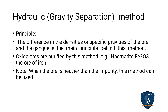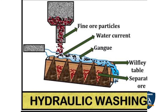You must know that when the ore is heavier than the impurity, this method is used. The ore being denser than the impurity is the key condition. The principle is the difference in density between the ore and gangue. The hydraulic method is used for oxide ores — for example, hematite, the ore of iron.